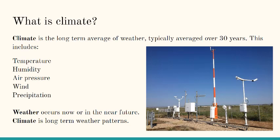Climate is different than weather. Climate is the long-term average of weather, typically averaged over 30 years. This includes temperature, humidity, air pressure, wind, and precipitation. The picture on the right is weather observing equipment. It takes automated samples or measurements of the air every hour, or more often if the weather is changing.